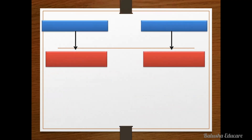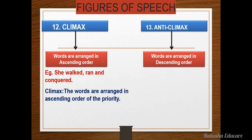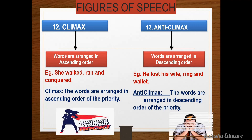Let's see climax and anticlimax. Words arranged in ascending order is known as climax, and words arranged in descending order is known as anticlimax. For example, 'She walked, ran and conquered' — climax, because the words are arranged in ascending order of priority. And here: 'He lost his wife, ring and wallet' — anticlimax, because the words are arranged in descending order of priority. So climax is ascending order and anticlimax, opposite to climax, is descending order. Very simple to learn and understand.